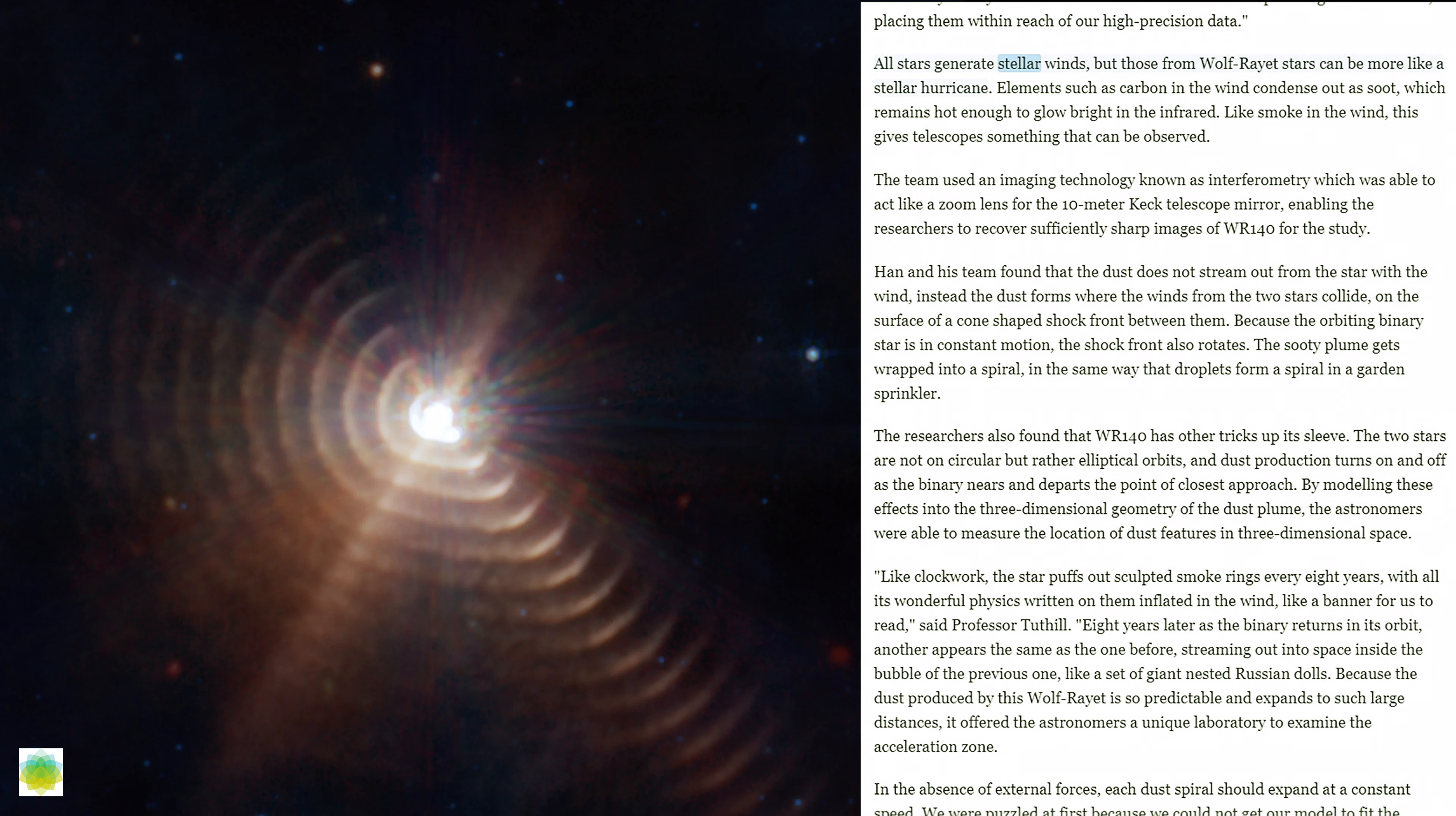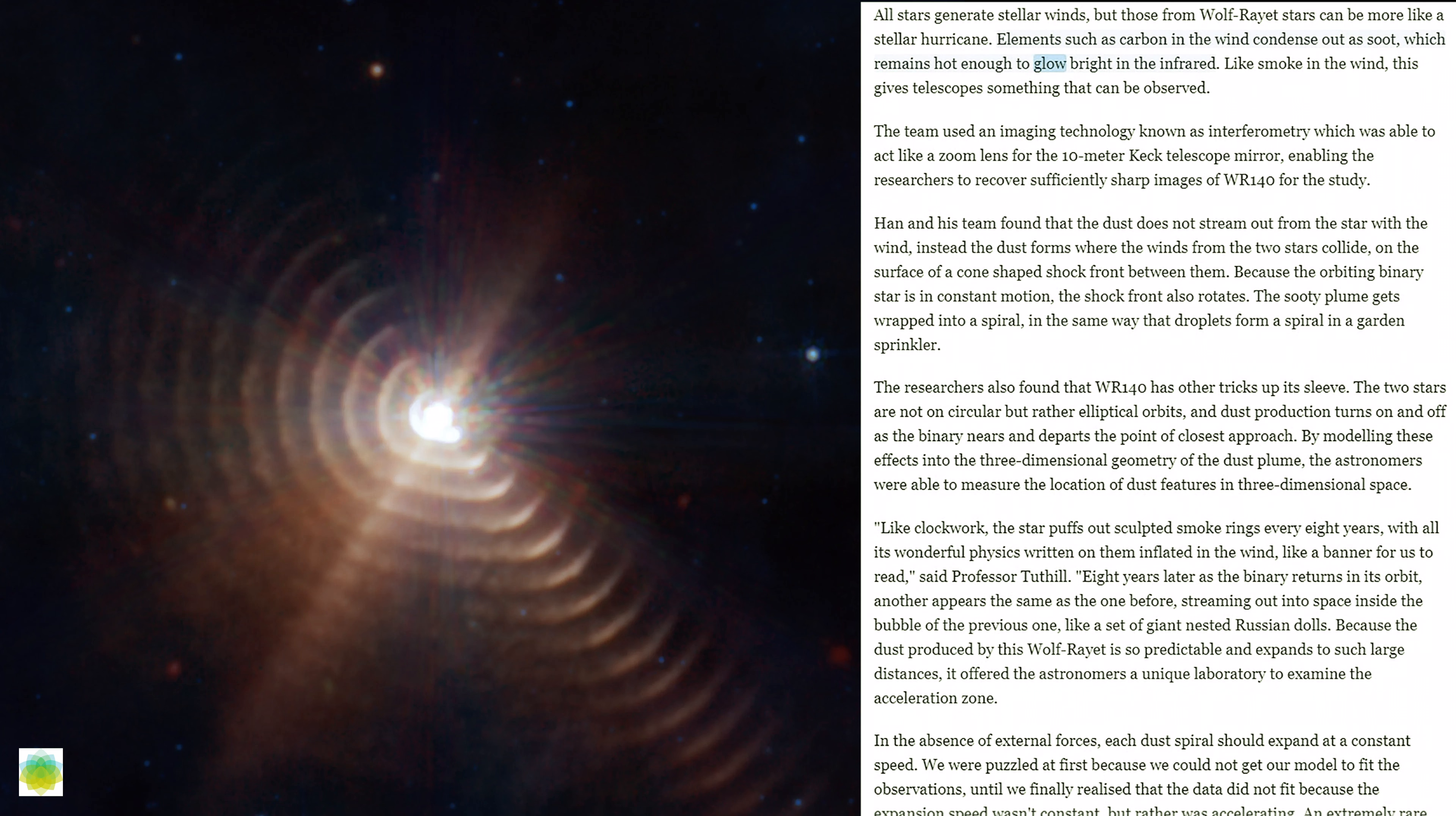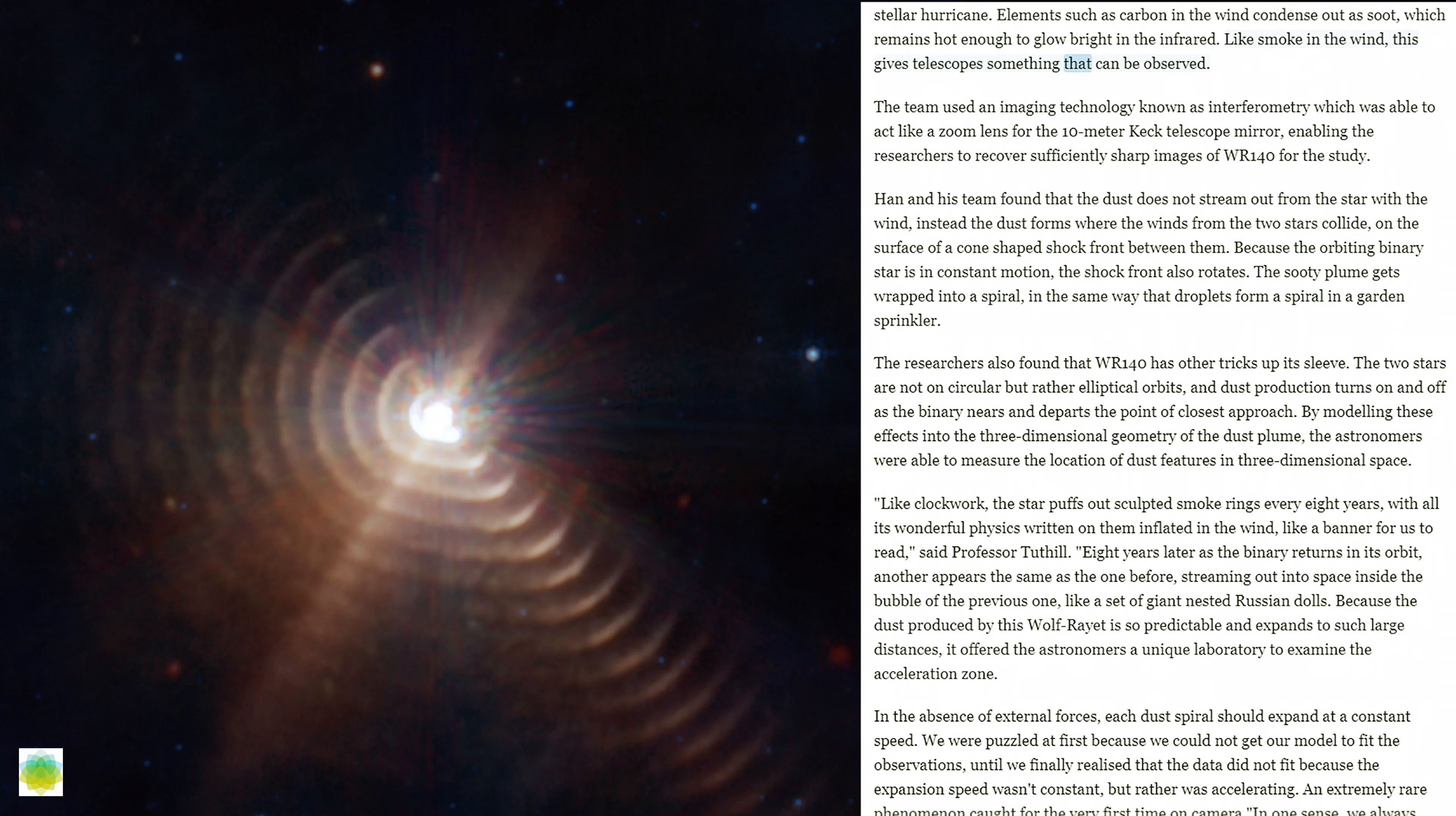All stars generate stellar winds, but those from Wolf-Rayet stars can be more like a stellar hurricane. Elements such as carbon in the wind condense out as soot, which remains hot enough to glow bright in the infrared. Like smoke in the wind, this gives telescopes something that can be observed.